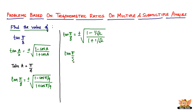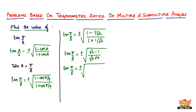Solving that gives tan(π/8) equal to plus or minus the square root of (√2 minus 1) divided by (√2 plus 1). Since we have the same number with different signs, let's rationalize to get rid of the square root in the denominator. We multiply numerator and denominator by (√2 minus 1).